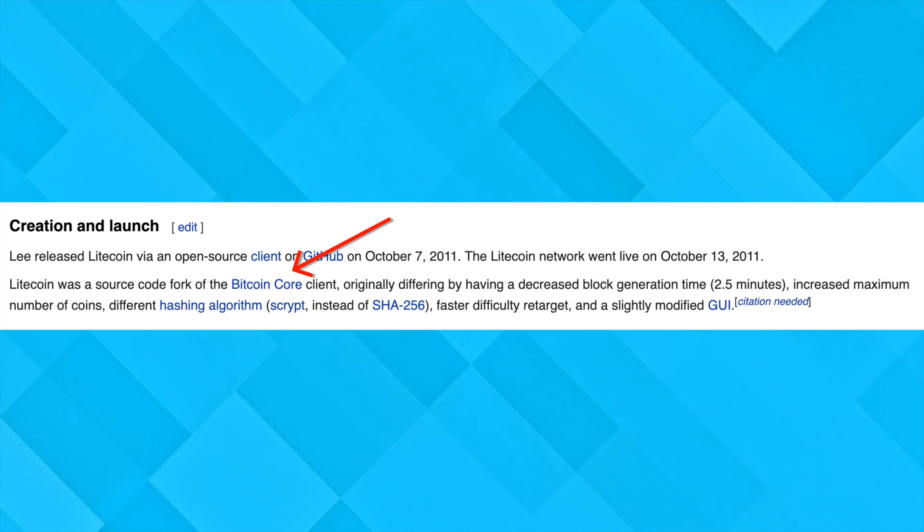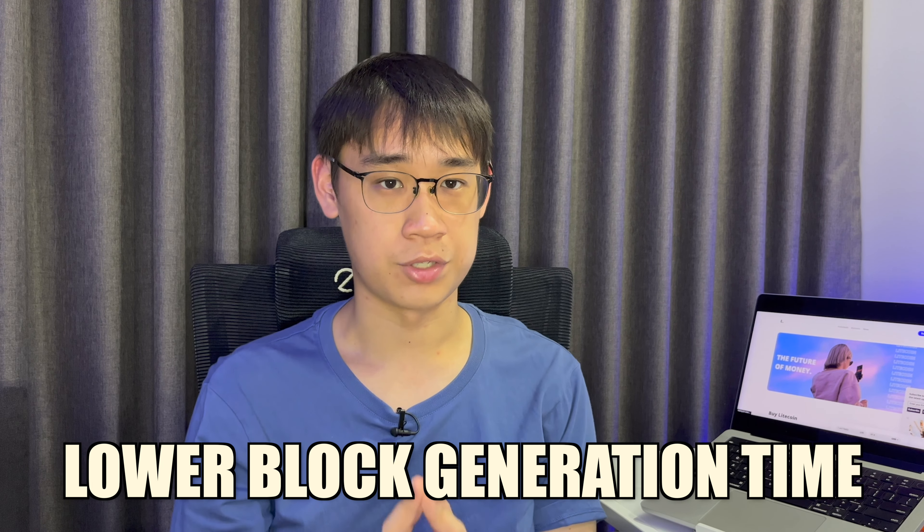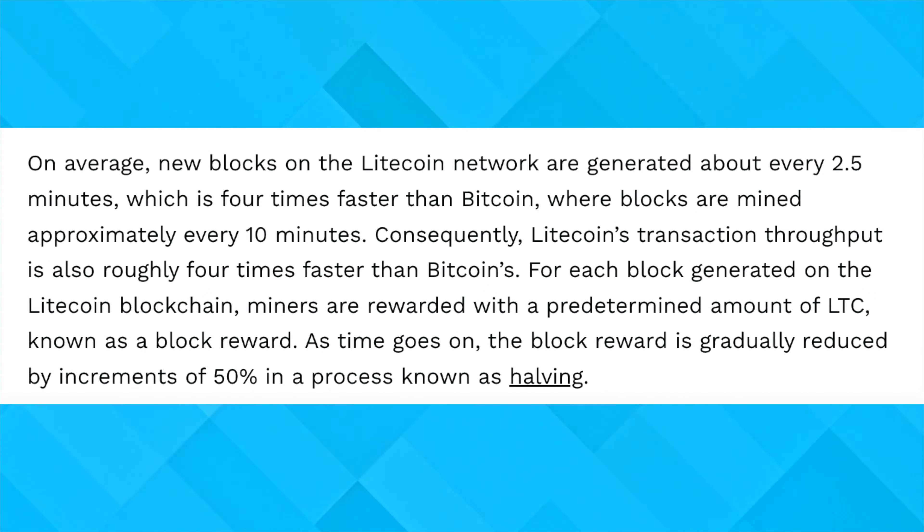Litecoin is actually a fork of Bitcoin where its code was copied with some minor changes. The main difference is that Litecoin has a lower block generation time, which allows it to process transactions much faster than Bitcoin.